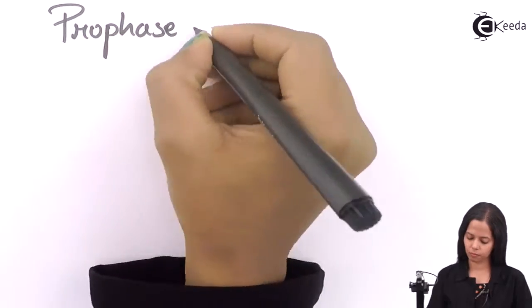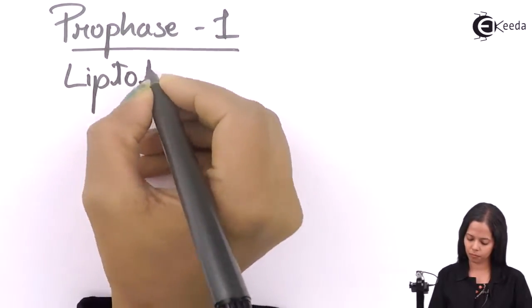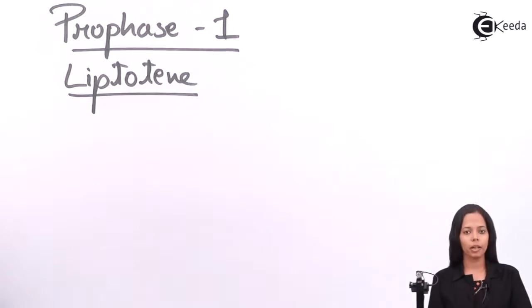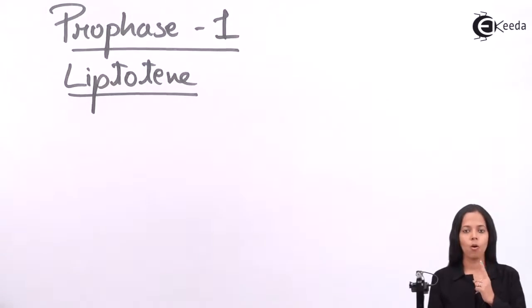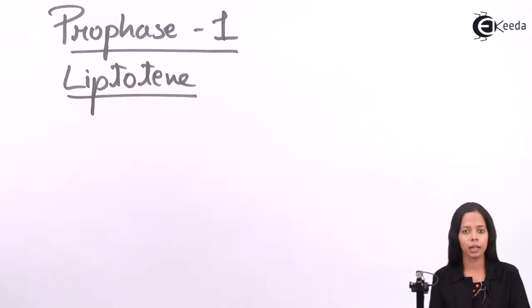Let's start with the first stage of Karyokinesis I, that is Prophase I. The very first phase is Leptotene. The term is derived from two Greek words: 'Lepto' meaning thin, and 'Tene' meaning ribbon. So a thin ribbon-like structure is called Leptotene.